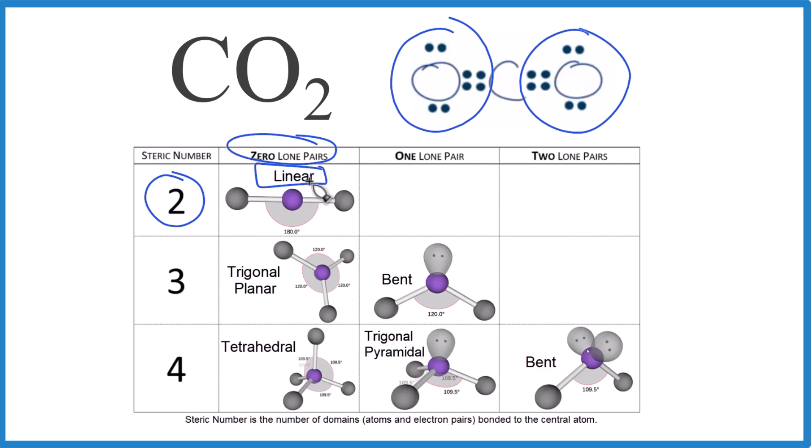CO2, that's going to be a linear molecule. Its molecular geometry is going to be linear and the bond angle here, 180.0 degrees. Let's look at that in 3D.